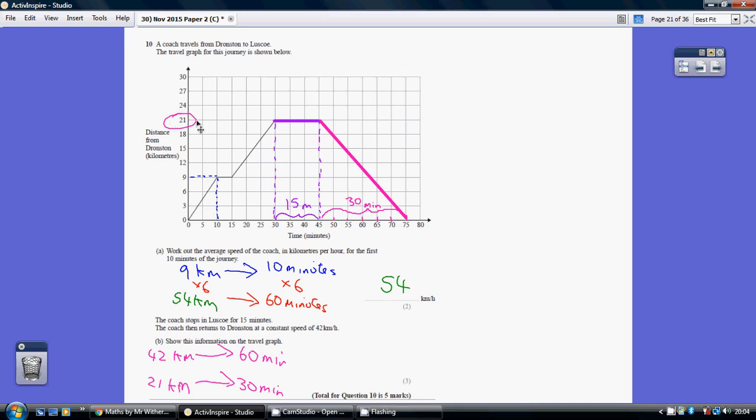Well, we've got to go back 21 kilometers. 21 kilometers will take how long? Well, it's half the distance. It will take half the time. It will take 30 minutes. So from starting the journey back here, 30 minutes later is here. It's a constant speed.